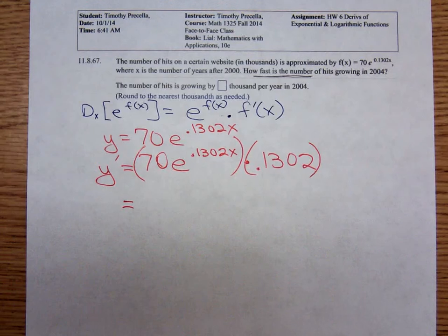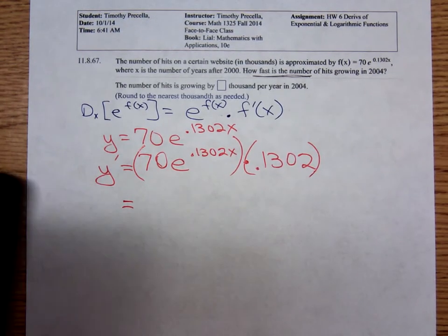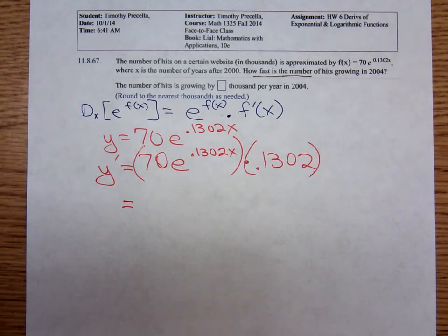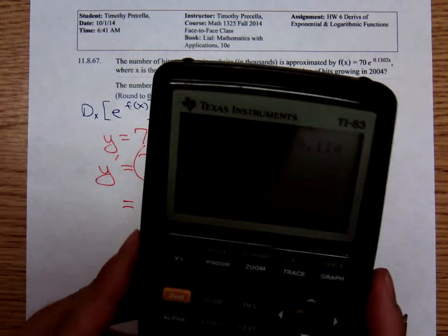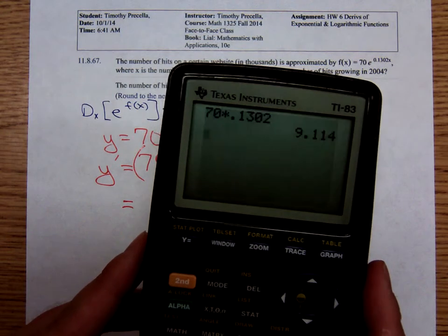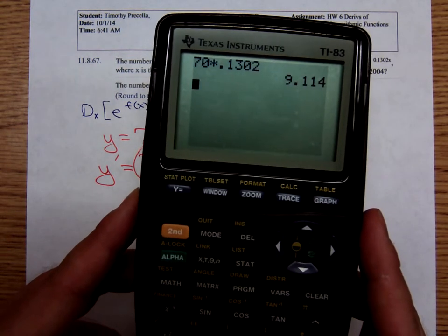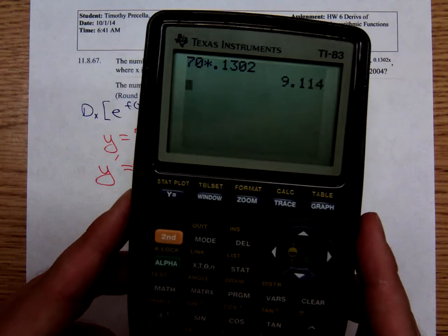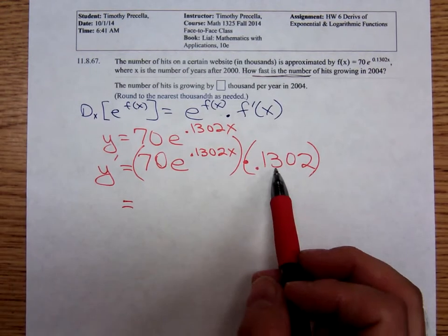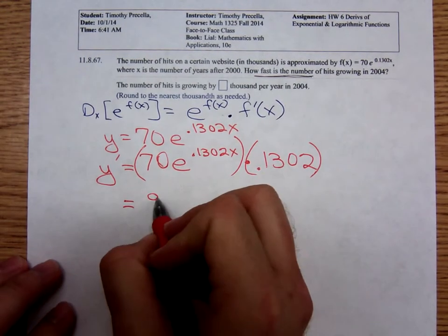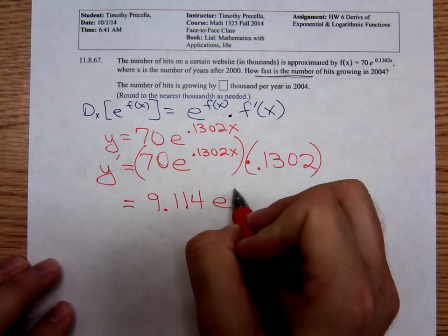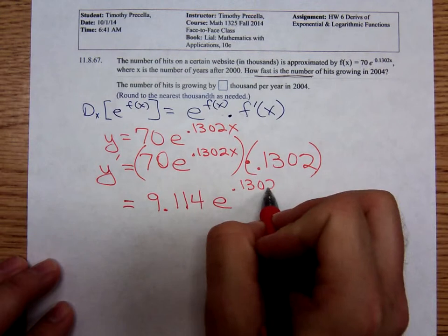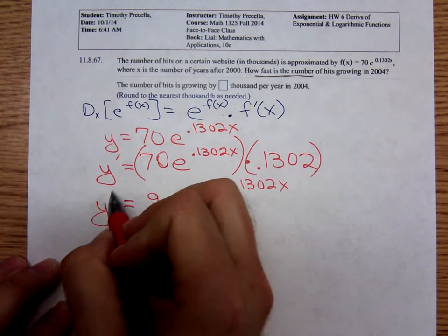We have to multiply 70 by 0.1302. It's giving me 9.114. So 70 times 0.1302 is 9.114e to the 0.1302x. There's my rate of change function.